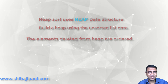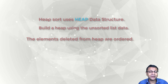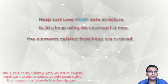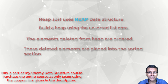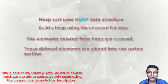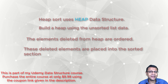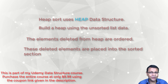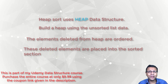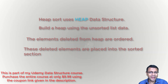Deletion of the heap is always going to get us elements which are ordered. We pick up those ordered elements by deleting the heap and place them in the sorted section. That's how the sorted section grows and the unsorted section shrinks. At the end, we are going to have all the elements sorted in the sorted section, and the heap is going to be empty.